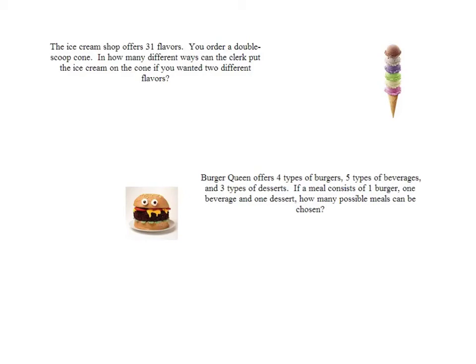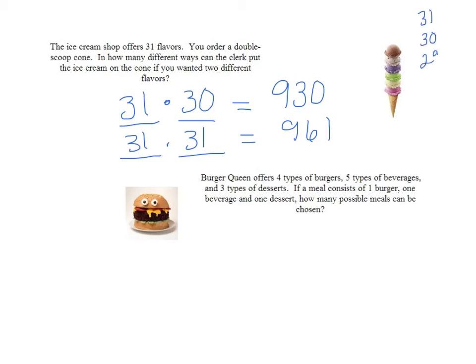An ice cream shop offers thirty-one flavors. You order a double scoop cone. In how many different ways can the clerk put the ice cream on the cone if you wanted two different flavors? So the first time that I choose, I can choose from all thirty-one flavors. Since I can't repeat it, then I'm only going to have thirty after that. And when I multiply that out, I'm going to have thirty-one times thirty, which is nine hundred and thirty. If I can repeat, then that would be thirty-one times thirty-one, and that's nine hundred and sixty-one, or thirty-one more choices. Of course, if I want to do the five and I don't want to repeat, then I would have thirty-one times thirty times twenty-nine times twenty-eight times twenty-seven, and that would be a much larger number.